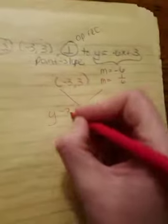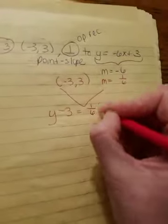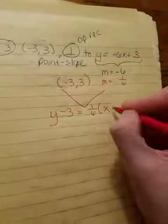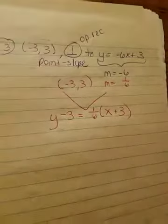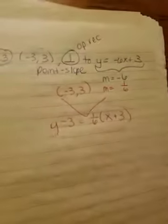So here we go. Point slope, we're old pros at this now. We're going to have y minus 3 equals 1 sixth parenthesis x minus a negative 3, x plus 3. And that's your answer because they wanted it in point slope.